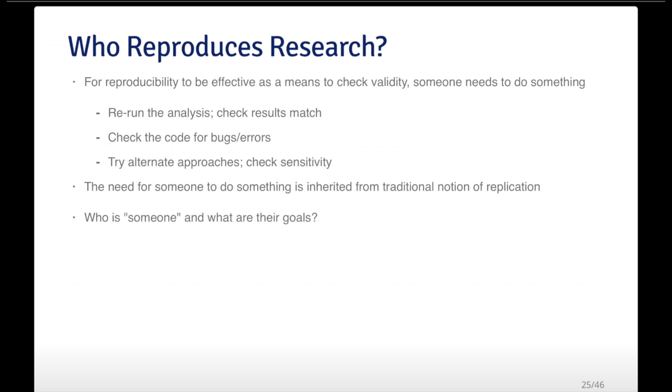In order for reproducibility to be effective in any way, someone has to do something. If I just publish this paper and it's reproducible, that doesn't necessarily mean anything until someone gets their hands on the data and the code and looks at it and does something and maybe even reproduces it. Someone has to do something.